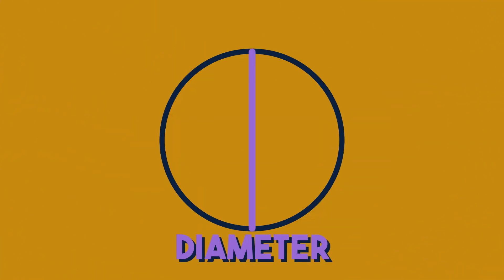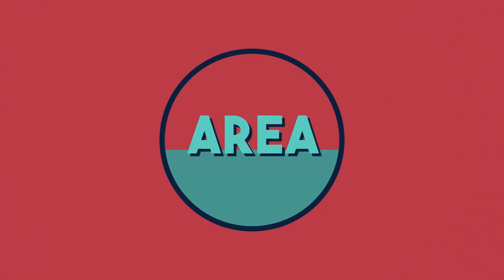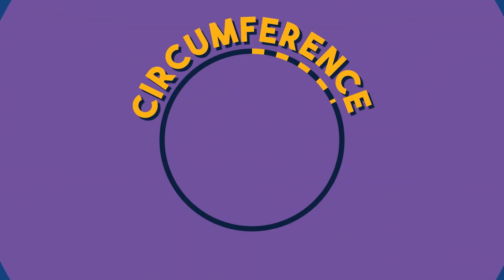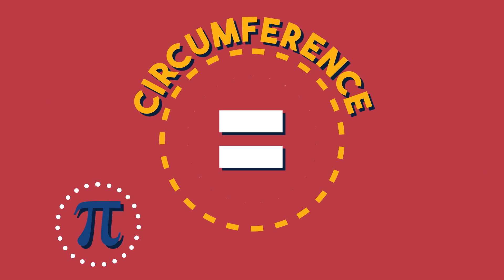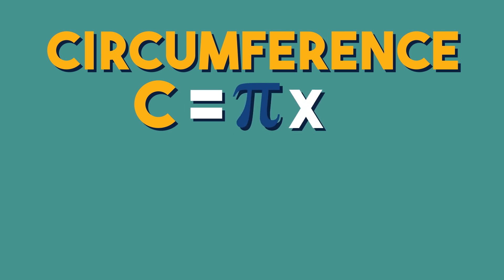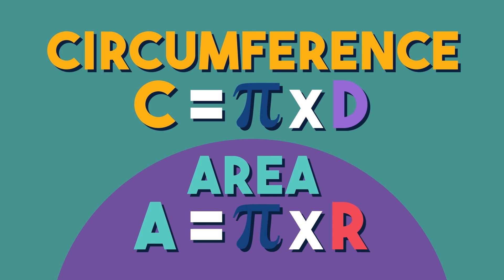Radius, diameter, circumference, and area. Circumference of a circle is pi times diameter, and the area is pi times radius squared.